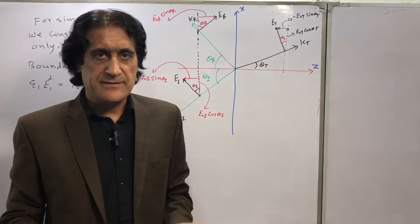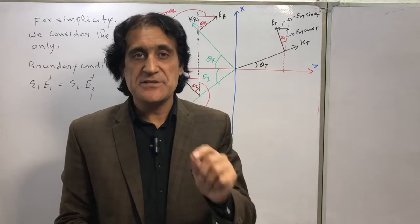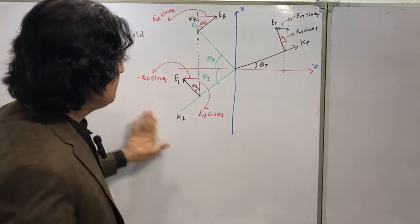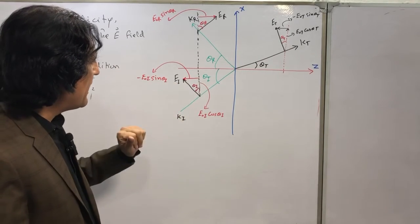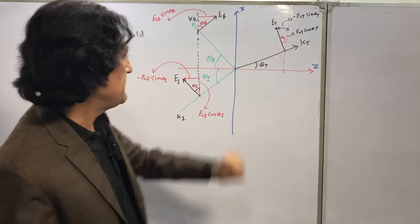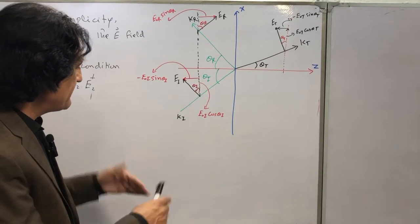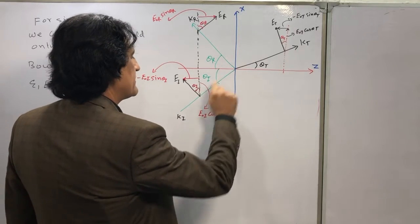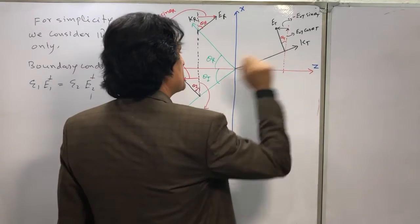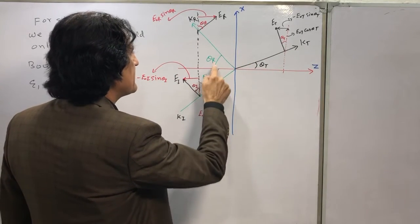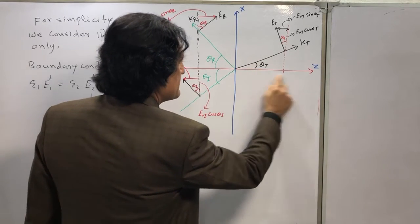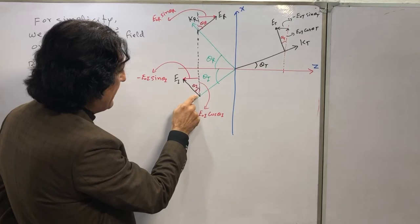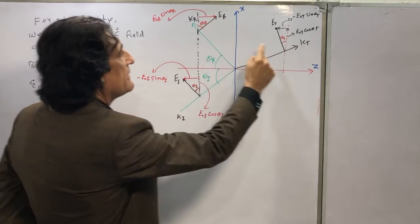For simplicity, we only consider the electric field component and ignore the magnetic field component. In this diagram we have only the electric fields: Eᵢ, Eᵣ, and Eₜ. The incident ray makes an angle θᵢ, the reflected ray makes angle θᵣ, and the transmitted ray makes angle θₜ with the z-axis. The x-axis is also shown.